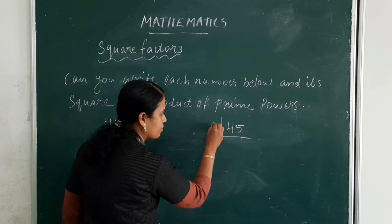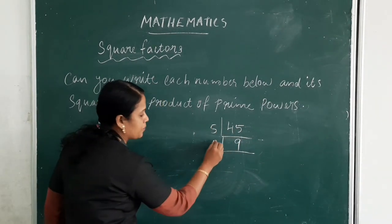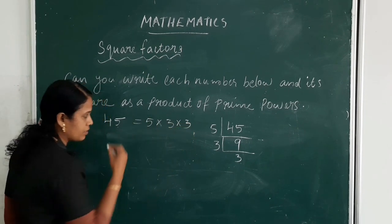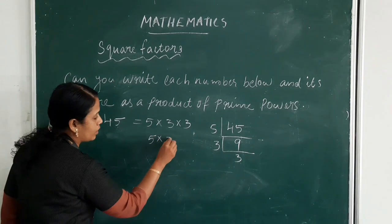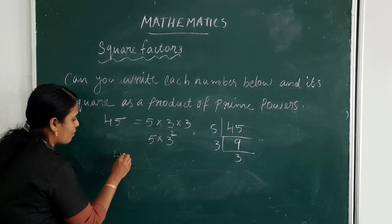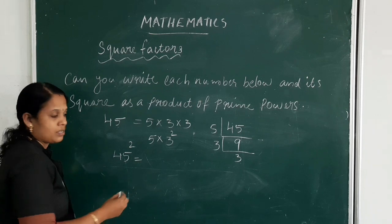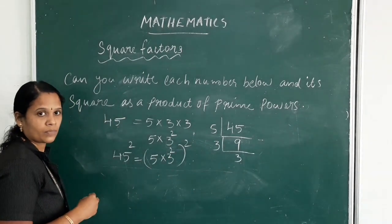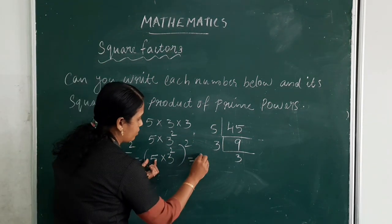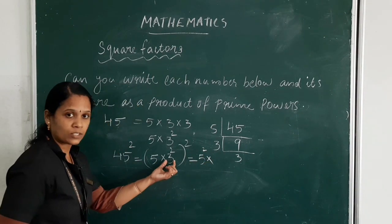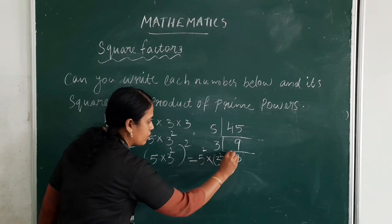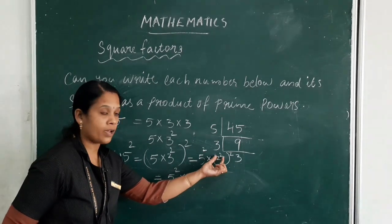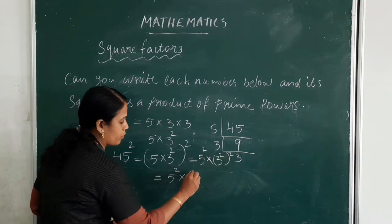45 is divisible by 5, giving 9. 9 is divisible by 3, giving 3. So 45 = 5 × 3 × 3, meaning 5 appears once and 3 appears twice, so 45 = 5 × 3². What is 45 squared? It is (5 × 3²) whole square, which gives 5² × 3 raised to 4, that is 3² squared equals 3 to the power 4.